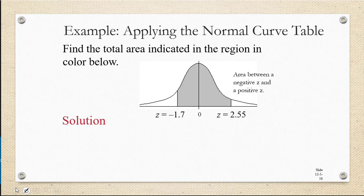Now let's look at this example where we're given the diagram. We won't always be given the diagram. We often have to draw it for ourselves. But in this case, we're given the diagram and asked to find the total area indicated in the region in color below. So we're looking for an area between a negative z-score, negative 1.7, and a positive z-score, z equals 2.55. You're always going to look up the z-scores and find the corresponding areas, but then you're going to use the diagram to figure out what to do with those areas.